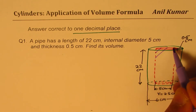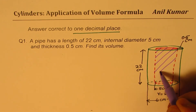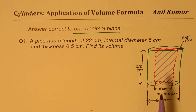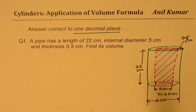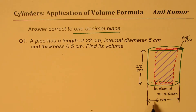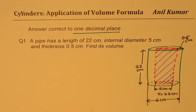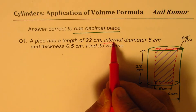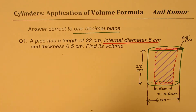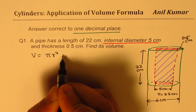Whenever we say a hollow pipe, we need to only find the inside volume. Since we are only interested in the inside, we could not bother about the thickness — thickness doesn't matter in this question. We are given internal diameter, so the volume formula will be pi r squared h.